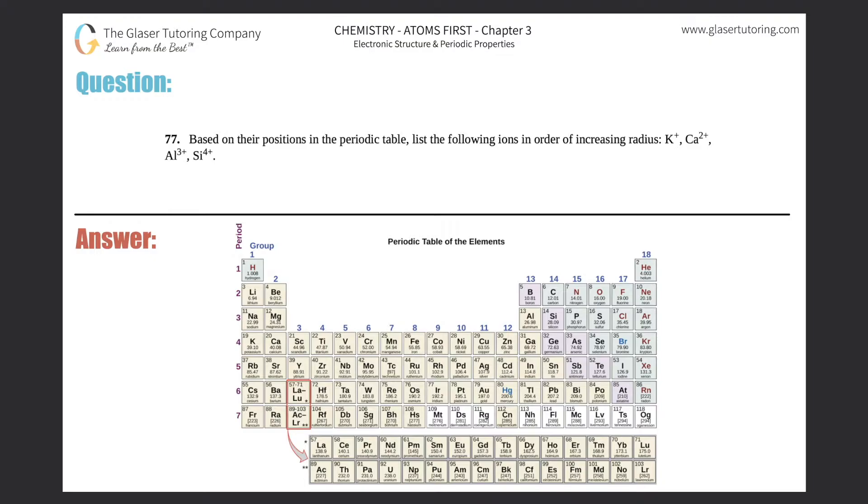Number 77. Based on their positions in the periodic table, list the following ions in order of increasing radius: K+, Ca2+, Al3+, and Si4+. All right.